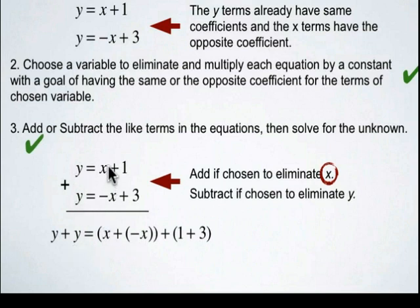y plus y is equal to x plus negative x plus 1 plus 3. And y plus y is 2y, 0 plus negative x.